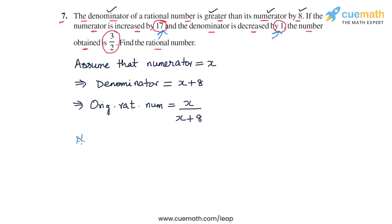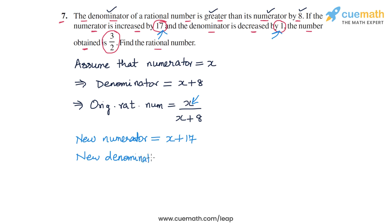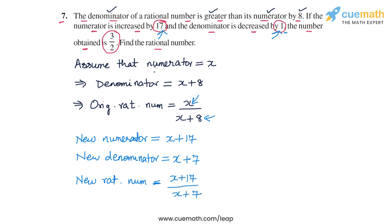We are told that if the numerator is increased by 17 and the denominator is decreased by 1, the new numerator — obtained by increasing the original numerator x by 17 — will be x plus 17. The new denominator will be the original denominator x plus 8, subtract 1, giving x plus 7.